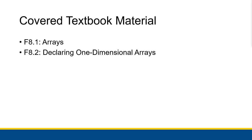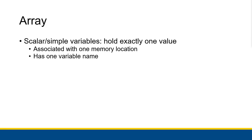The rest of 8.2 will be covered in the next video. Most of what we've seen so far in terms of data is what's known as a scalar value or a simple value, which we store in a scalar or simple variable, and it holds exactly one value. Any of your numbers are going to be scalar, and they are associated with exactly one memory location.